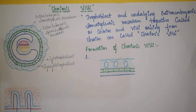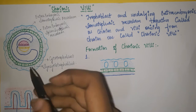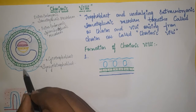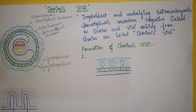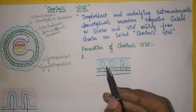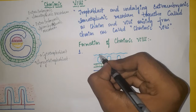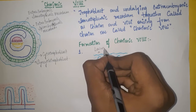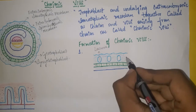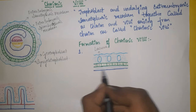For the formation of chorionic villi, the first step is the appearance of lacunae — meaning spaces — and trabeculae in the syncytiotrophoblast. Initially, the lacunae are arranged irregularly in the syncytiotrophoblast; later on they will be arranged radially. These spaces are called lacunae.